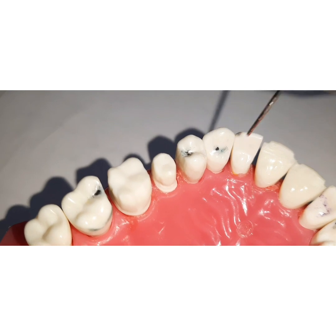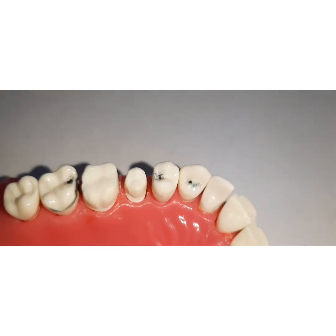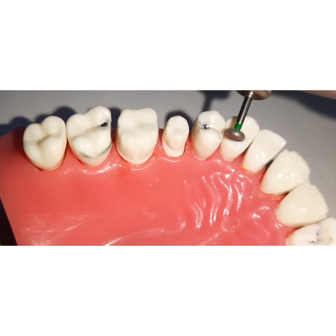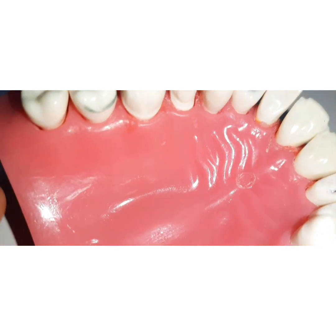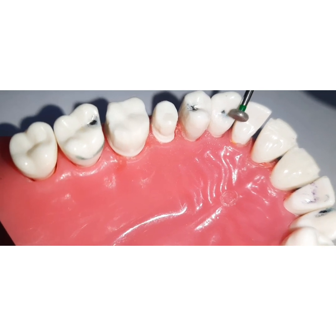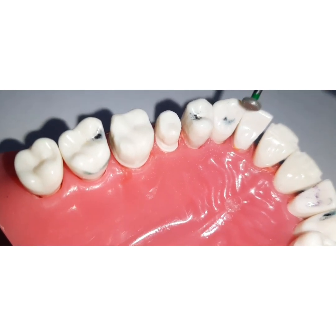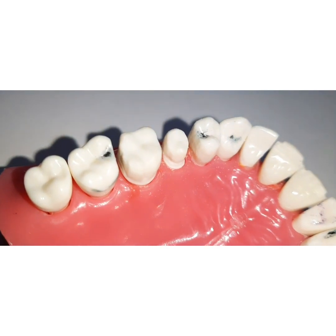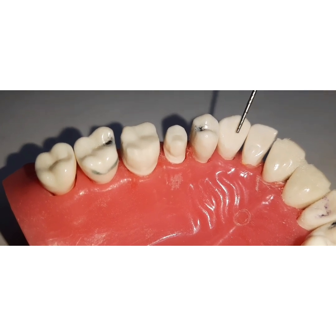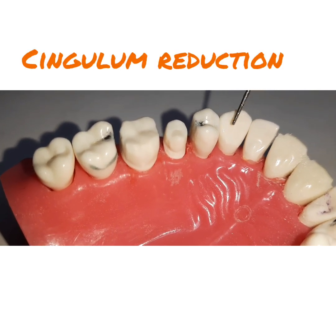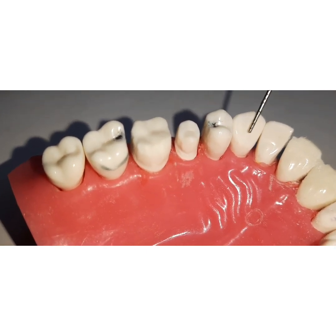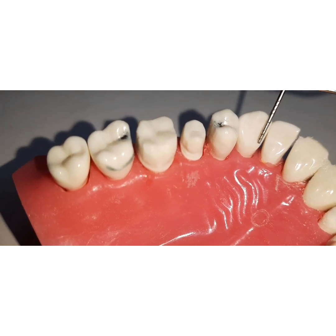The cingulum reduction is done with a wheel-shaped diamond bur, and the lingual axial reduction is done with a torpedo bur. Using the wheel-shaped bur, you make two concave depressions on the cingulum area on both sides of the ridge, achieving approximately 0.7 mm of reduction for occlusal clearance.